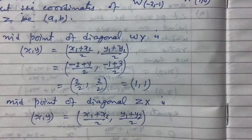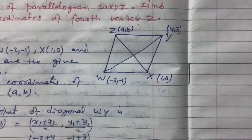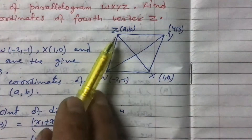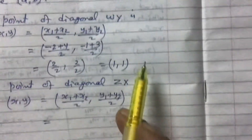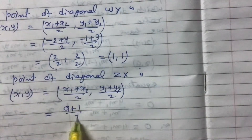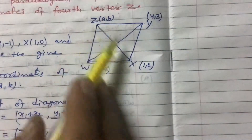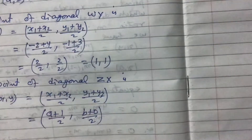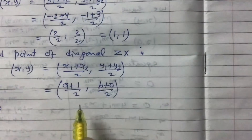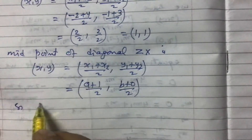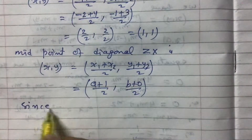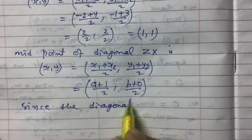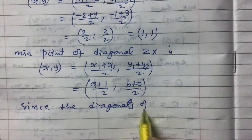Now for the midpoint of ZX: here x1, y1 is Z = (a, b) and x2, y2 is X = (1, 0). So x1 + x2 means a + 1, giving (a + 1)/2, and y1 + y2 means b + 0, giving b/2. So the midpoint of ZX is ((a+1)/2, b/2).